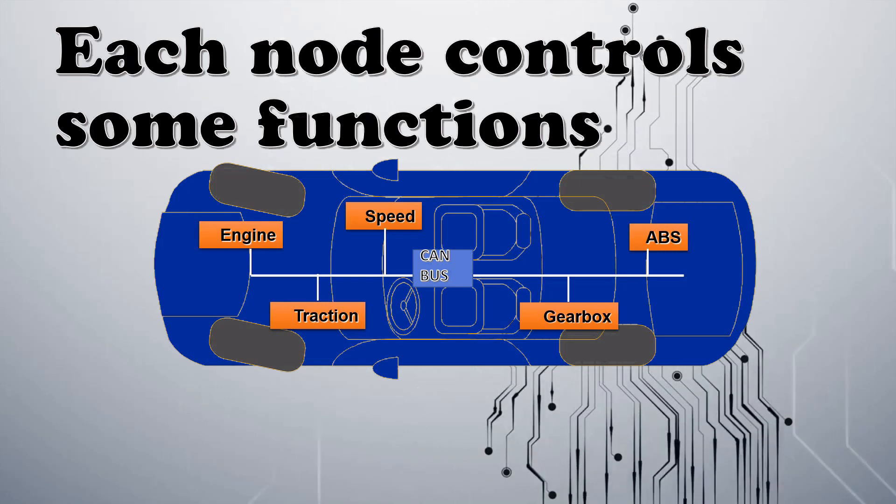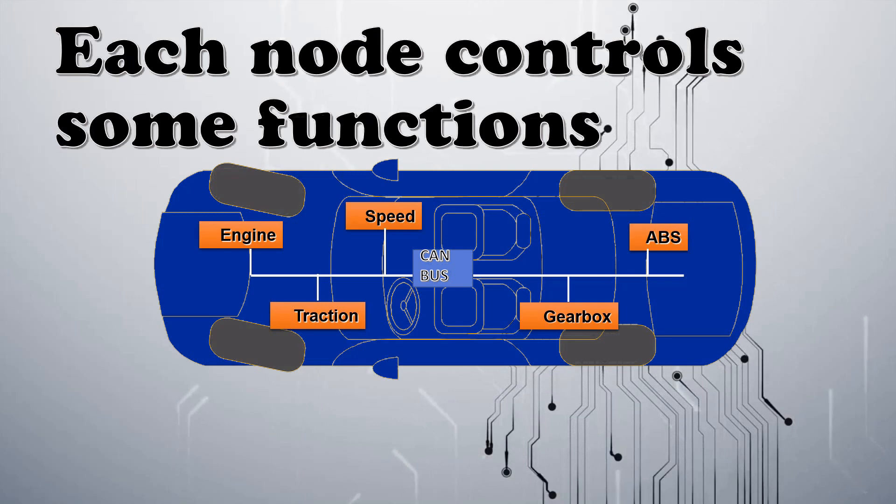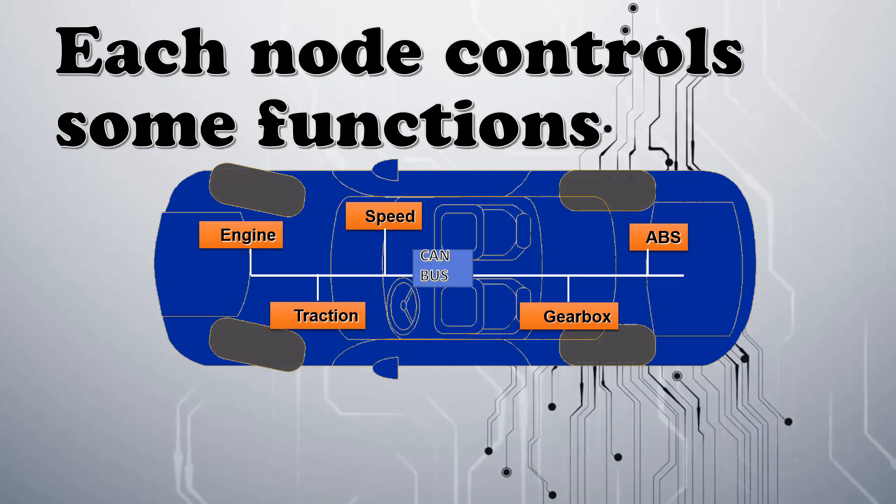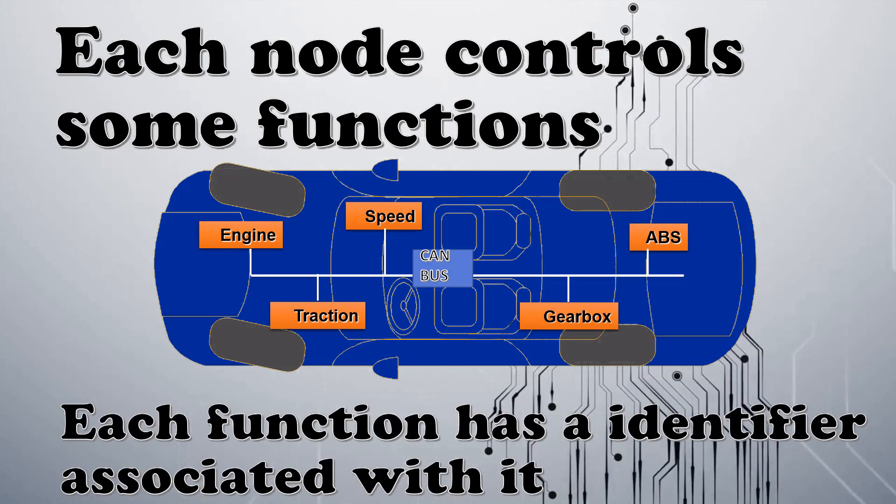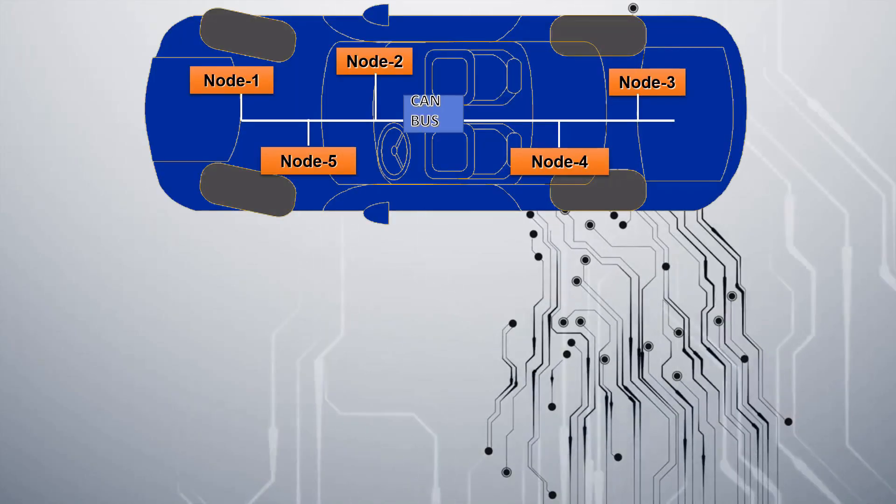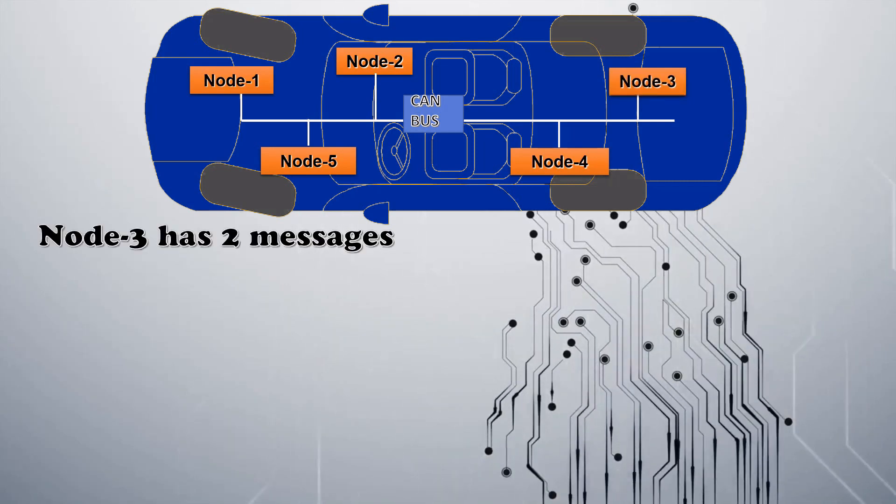Each node controls some functions. For example, ABS controls the anti-braking system. Gearbox controls gear and speed unit controls the speed. Each function has an identifier associated with it. We will take this as a reference. In this, Node 3 has two messages.